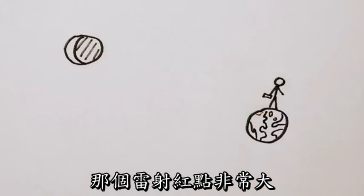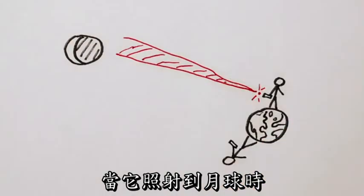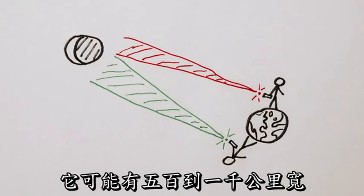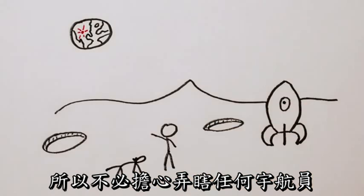And as you may have guessed, the red dot of a laser pointer is pretty big by the time it gets to the moon. Depending on your laser, it might be 500 or 1000 kilometers across. So don't worry about blinding any astronauts.